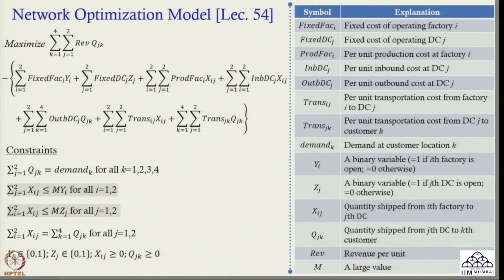Looking at the optimization model discussed in the last class, if you pay attention to the highlighted portion, you will see that Factory 1 and Factory 2 have unlimited capacity. Similarly, Distribution Centre 1 and Distribution Centre 2 have unlimited capacity. The reason is the value M — it is present in both constraints, and M is a very large value.